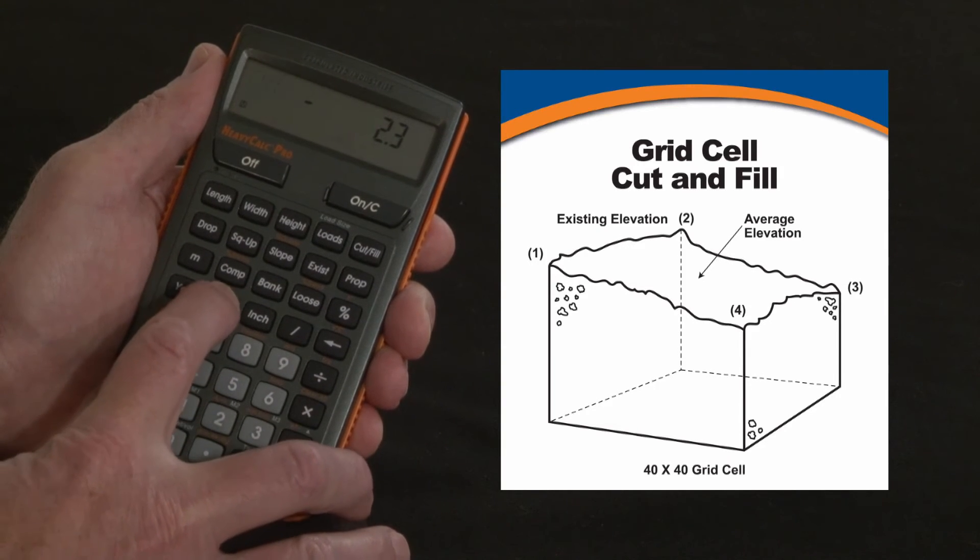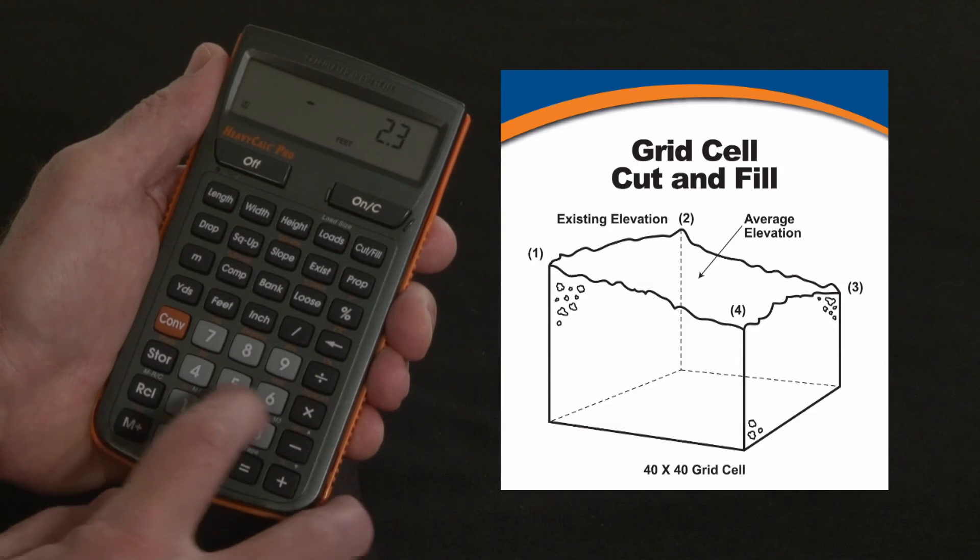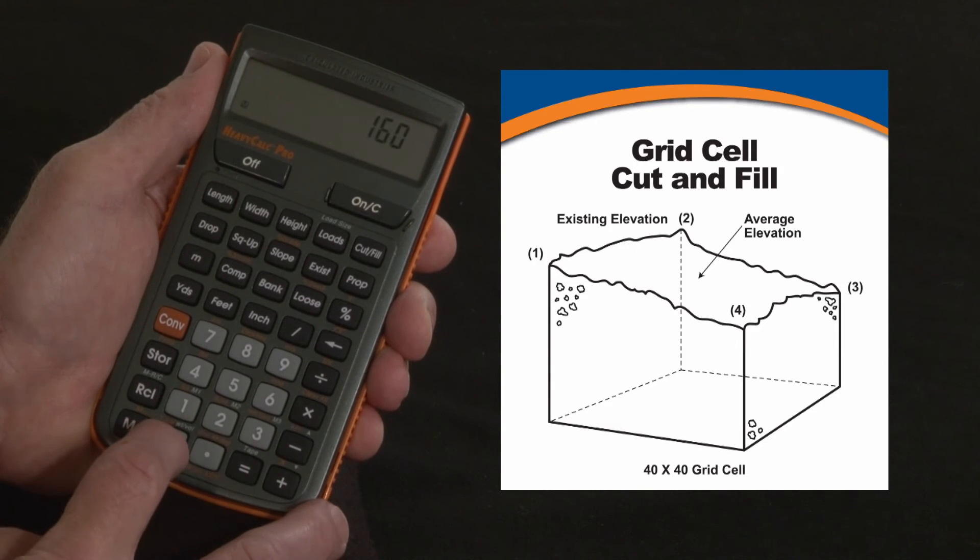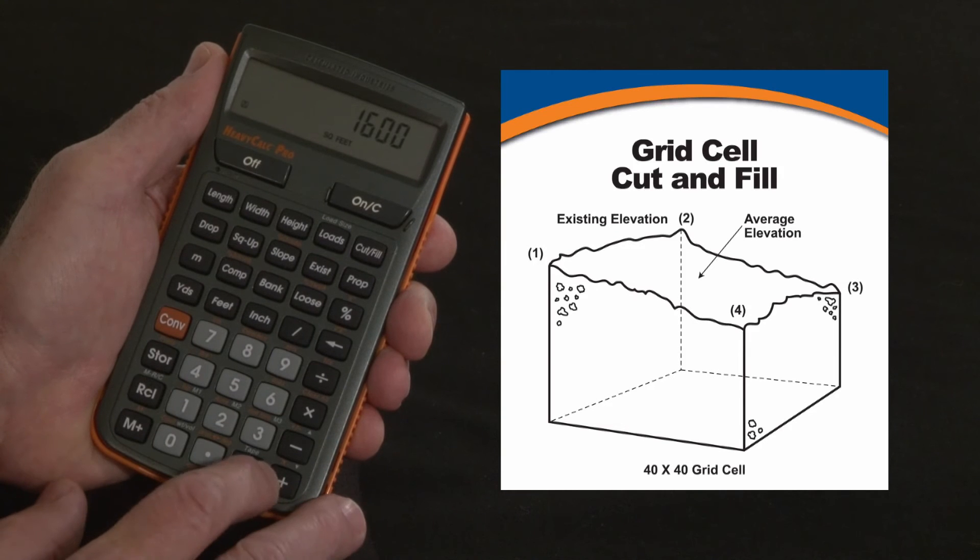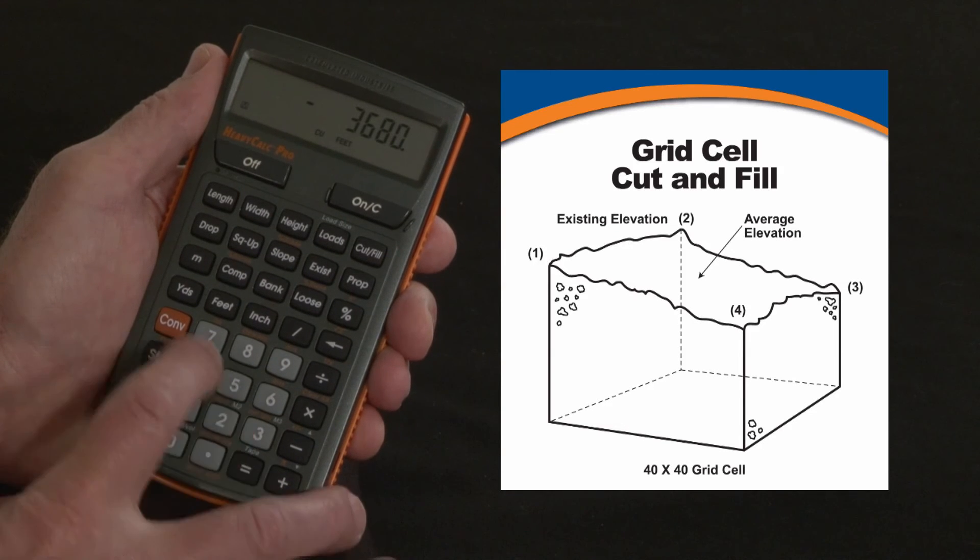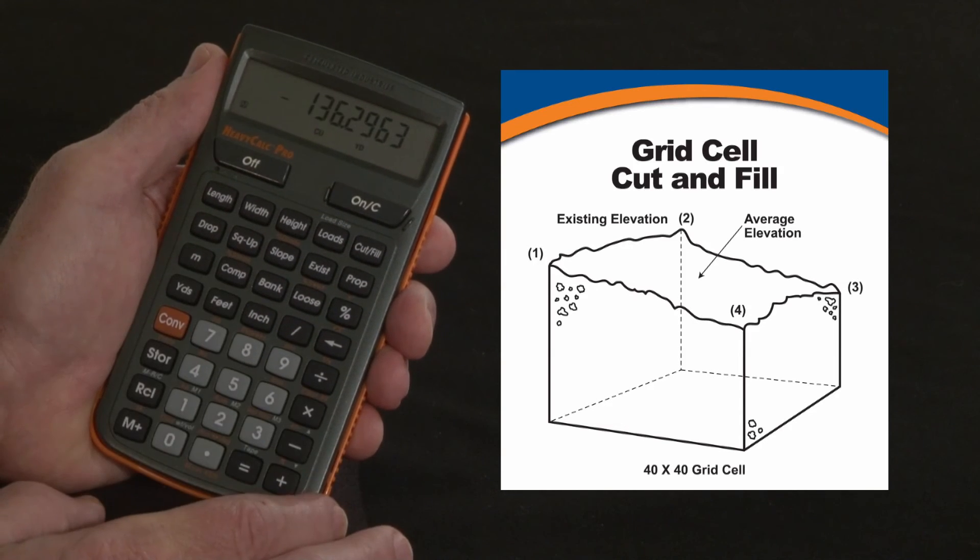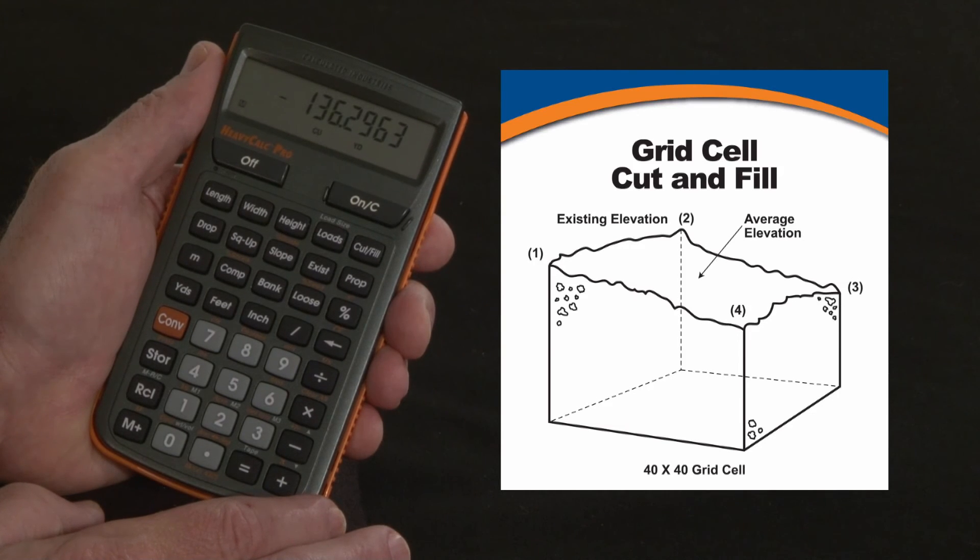Now let's label that as feet, and multiply that by the 1600 square feet of that 40 by 40 grid. Square feet, just like that. And then convert it to yards. So we're going to cut 136.2 cubic yards from that particular grid.